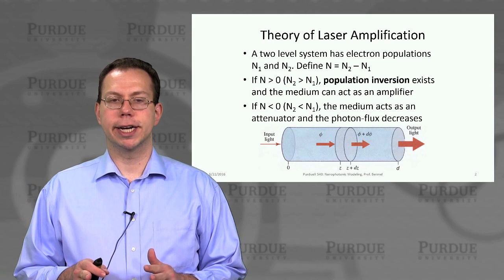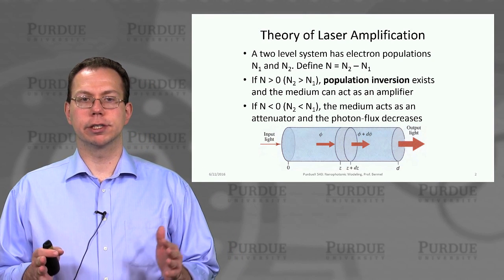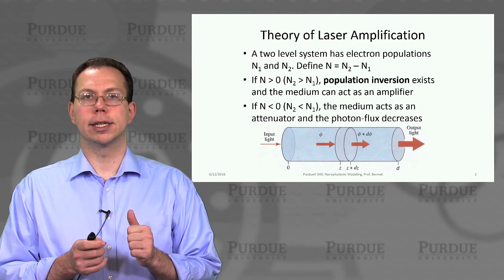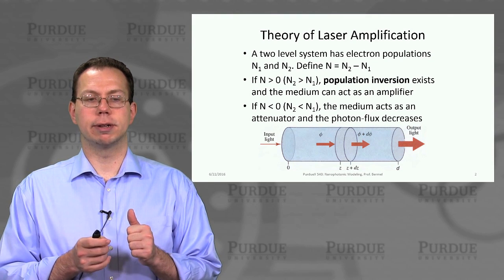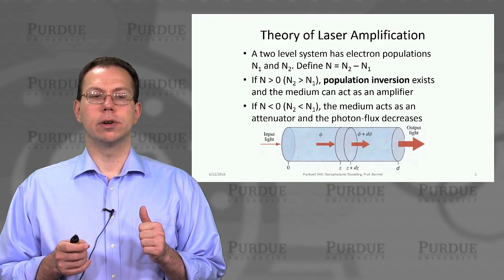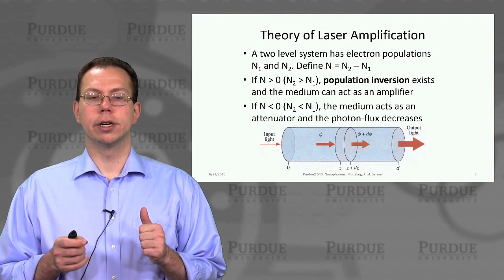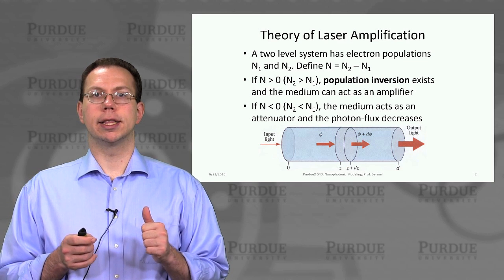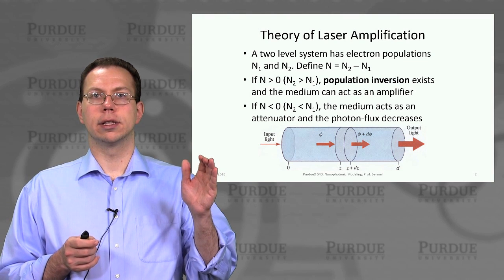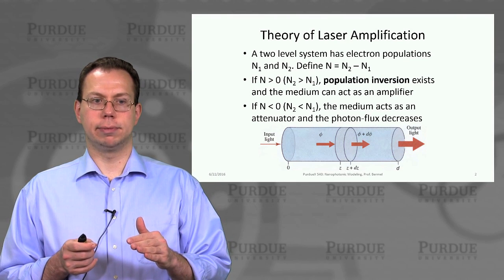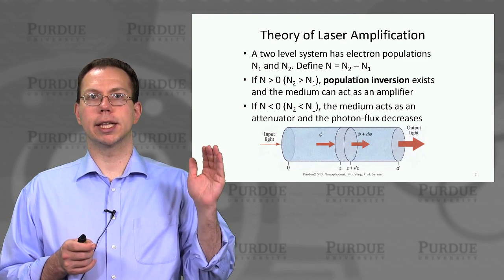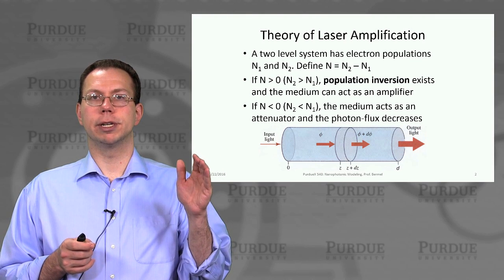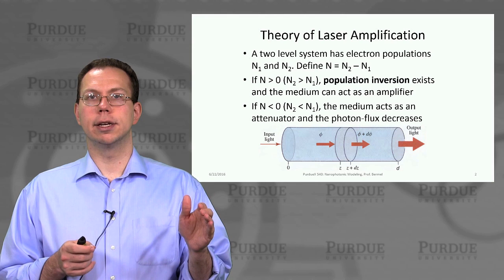Just to briefly summarize our theory of how laser amplification works — it depends on selecting out stimulated emission as our dominant process. And we need to have a situation called population inversion, which basically means that the number of excited level atoms exceeds the number of ground state atoms. So the stimulated emission rate would have to exceed the absorption rate.